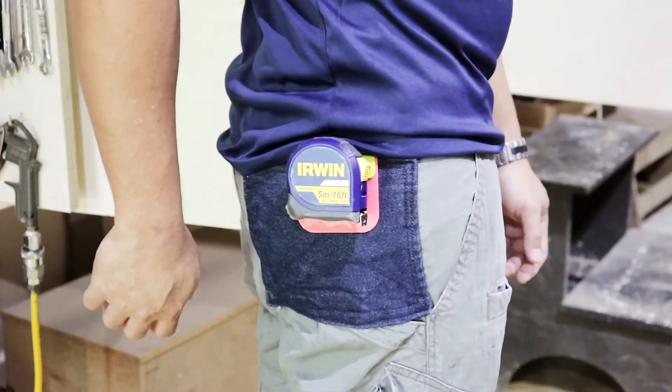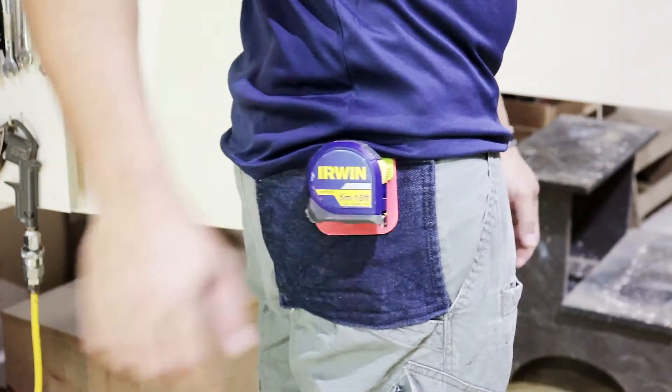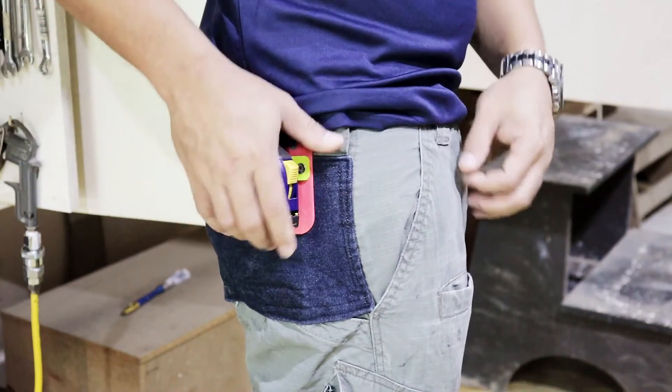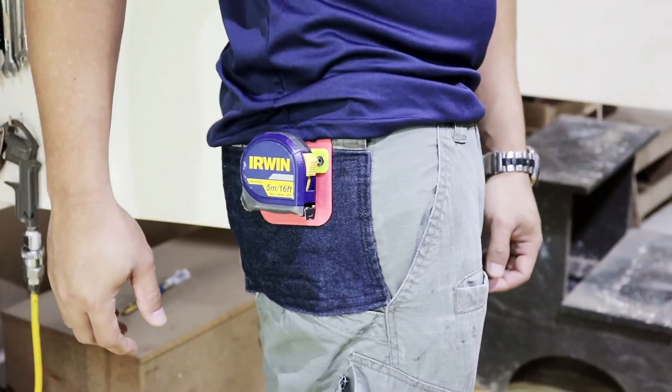The previous version, the one that broke, lasted for 3 months. I was hoping this newer design will last much longer than that. As you can see, this belt clip is just one of the many uses of a 3D printer in a workshop. I hope you liked the video.